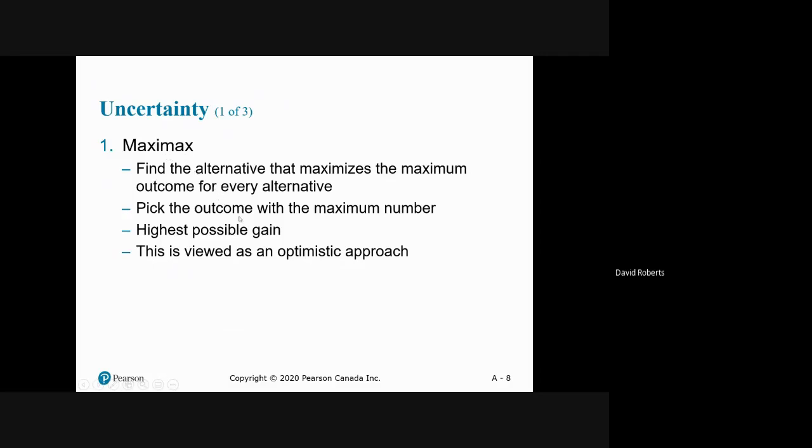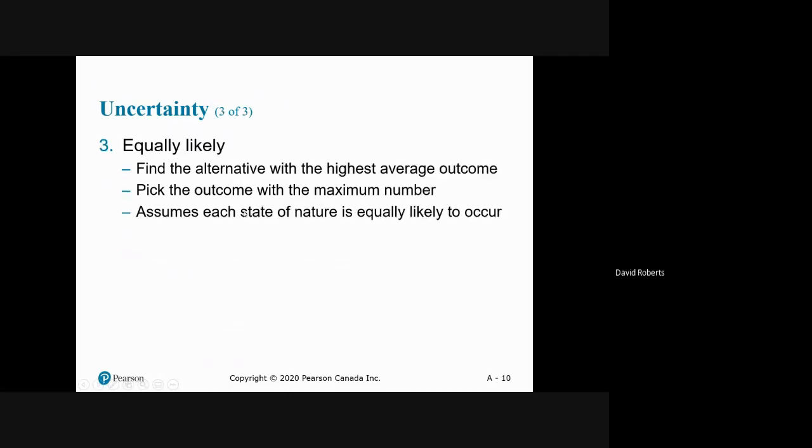Maxi-max simply tells you to find the highest possible gain. Maxi-min: least possible loss. Equally likely: 50-50. That means we're going to deal with ones that are not equally likely, so you're going to have 40-60, or 50-30-20 if there's three alternatives.